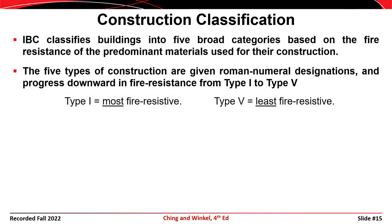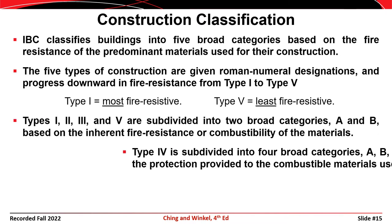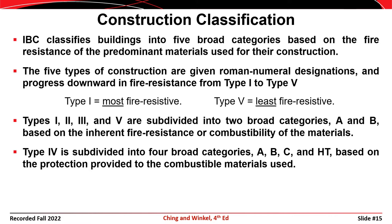The International Building Code includes five major types of construction, Types 1 through 5, with Type 1 being the most resistant to fire and Type 5 being the least resistant to fire. Each of these five main types is further subdivided into an A or B classification, except that Type 4 is subdivided into an A, B, C, or HT classification, resulting in 12 classes of construction with respect to fire resistance.